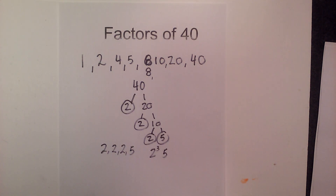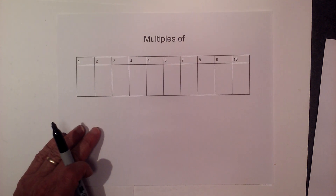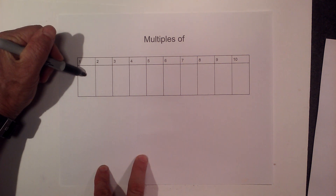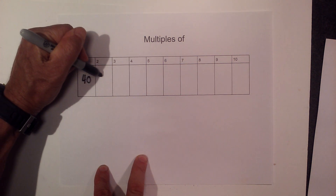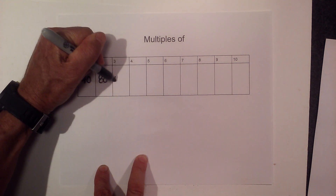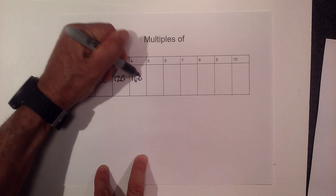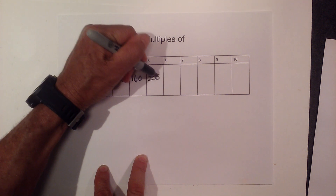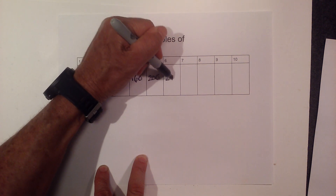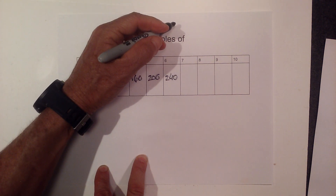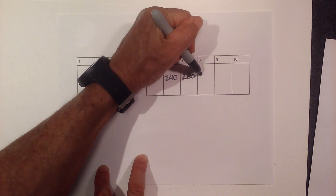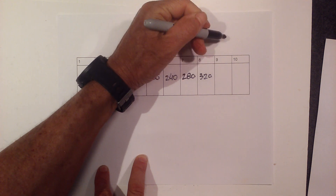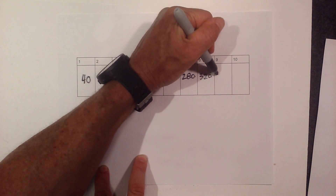So the prime factorization is 2 times 2 times 2 times 5, or you could write that as 2 cubed times 5. Next let's do the multiples of 40. It's a fairly easy number because it ends in 0. So we have 40, 80, 120, 160, 200, 240, 280, 320, 360.